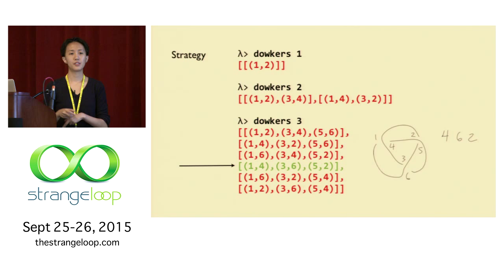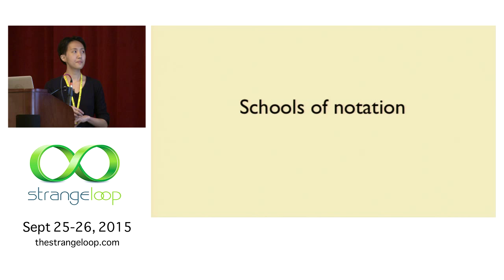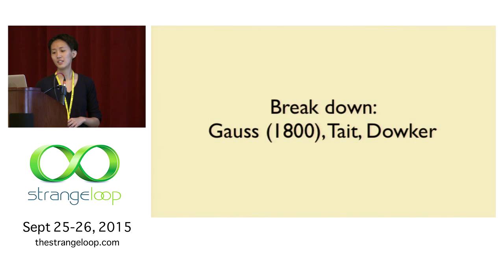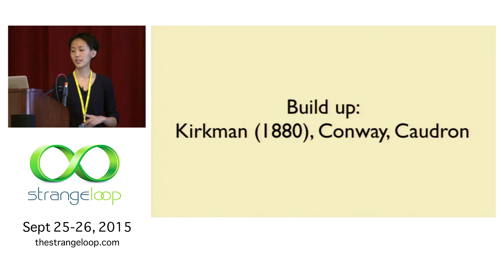Our general strategy for enumeration: write out all notations, enumerate textually, group equivalent knots, and throw out the junk. There are two schools of notation. One breaks down the knot — starting with Gauss in 1800, continued by Tait and Dowker himself. The other school builds up the knot from irreducible primitives that combine to form knots. This school includes Kirkman from the 1880s, Conway himself, and Calderon, a contemporary.